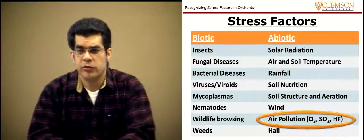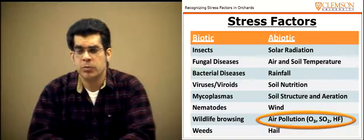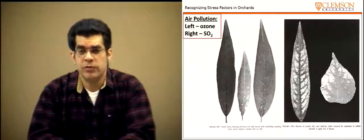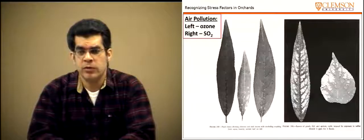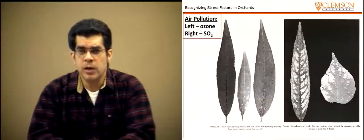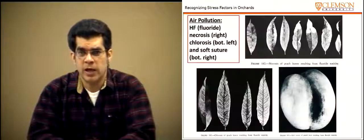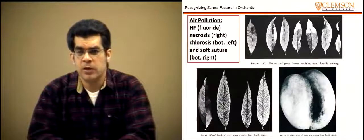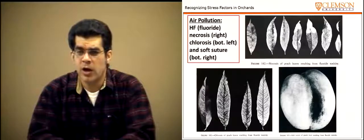Air pollution can also cause stress to the tree, though it is not seen often. Symptoms of ozone damage appear on peach leaves, and sulfur dioxide is another air pollutant that can cause symptoms. Hydrogen fluoride damage can cause necrosis, chlorotic symptoms, and soft suture symptoms on fruit. These are not seen very often, but they can occur.